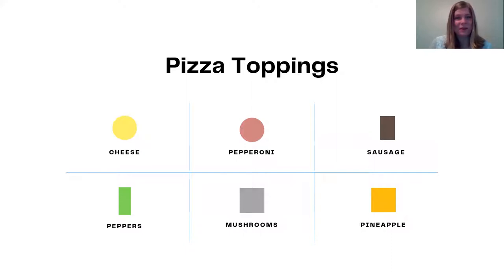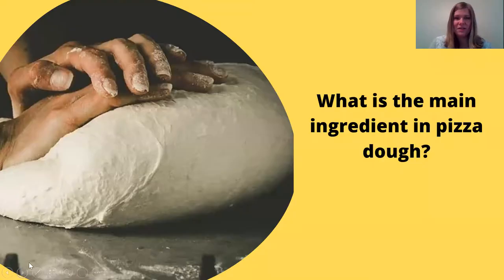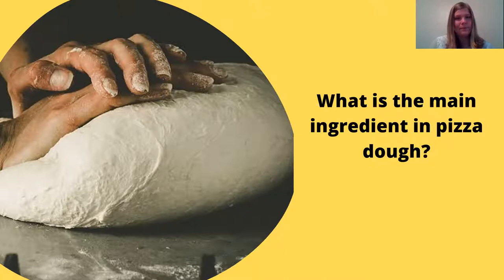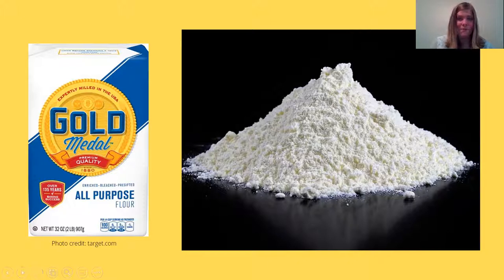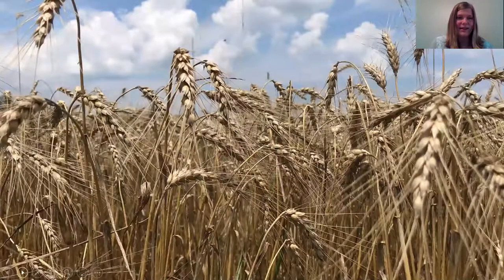There are a lot of different things we can put on pizza, so let's start at the very bottom — let's start with the crust. Pizza crust is made from dough that we bake. So what is the main ingredient in pizza dough? If you said flour, you are right. Flour is the main ingredient in pizza dough, and we actually get flour from a crop that we grow, and that crop is wheat.